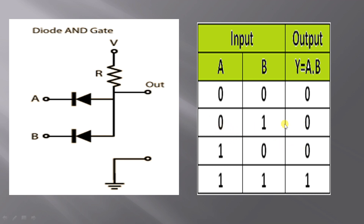Now I shall explain the case where 0V is given to A, so A is 0, and 5V is given to B, so B is 1. Since low voltage is given to the negative terminal of the diode connected to A, this diode is in forward bias and conducts current. The diode connected to B is in reverse bias and does not conduct current. Since the first diode is conducting, current flows through it and there is almost no voltage at the output. Output voltage is 0.